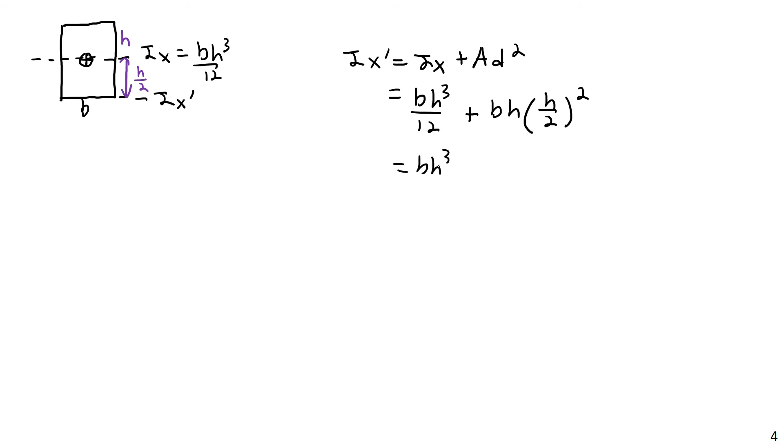So we'll have bh cubed over 12 plus that's going to be bh times h squared over 4, which will be bh cubed over 4. Oh not 12 again but 4. And but I want to put this in the common denominator, so bh cubed over 12 plus 3 bh cubed over 12. And that will just be 3 plus 1, or 3 plus 1 is 4 bh cubed over 12.